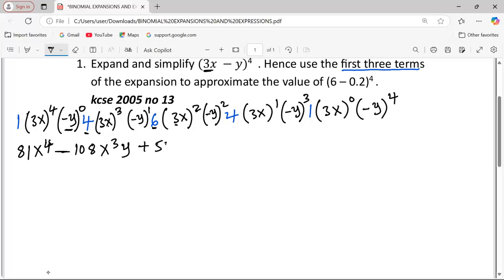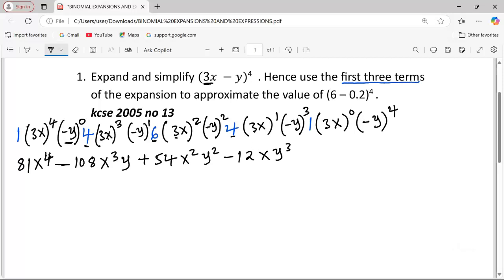Then y power 1, it just remains y, and it is negative y. In the third term, we have 6 multiplied by 9, which is 54, plus 54x^2y^2. When you square y, it becomes positive. 4 multiplies 3, giving us negative 12xy^3. And finally, we add y^4. So, this is now the full expansion.